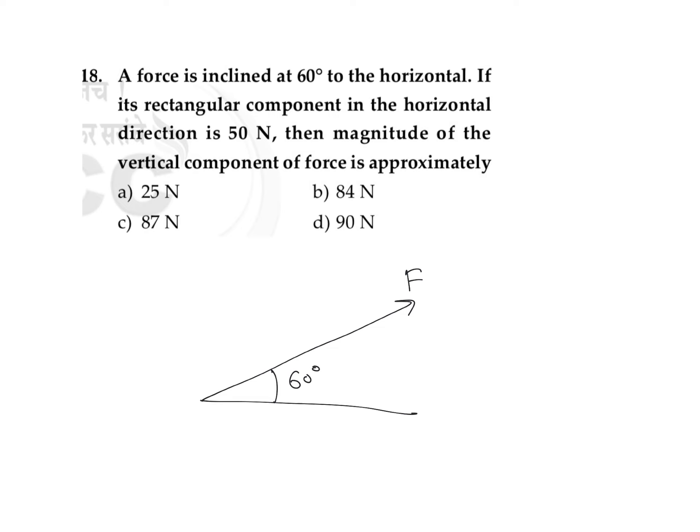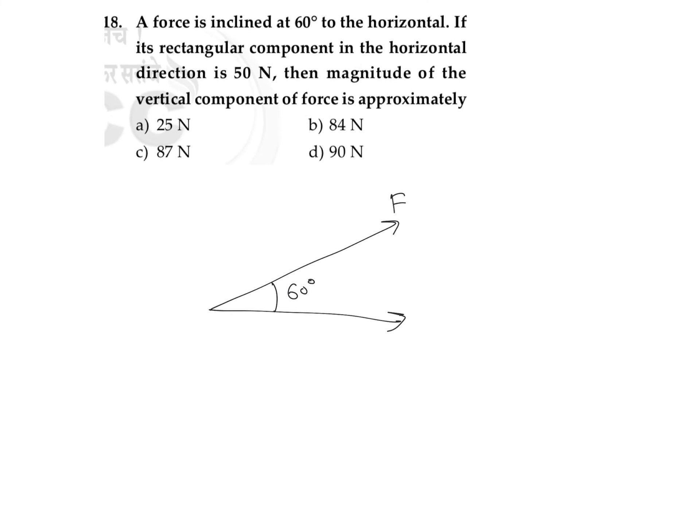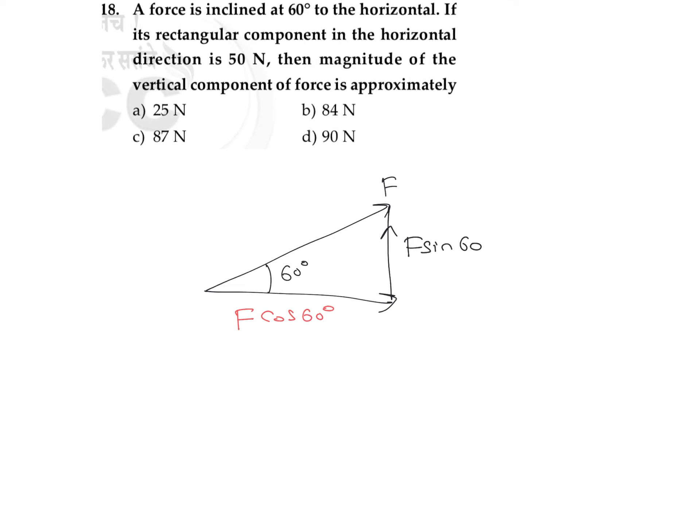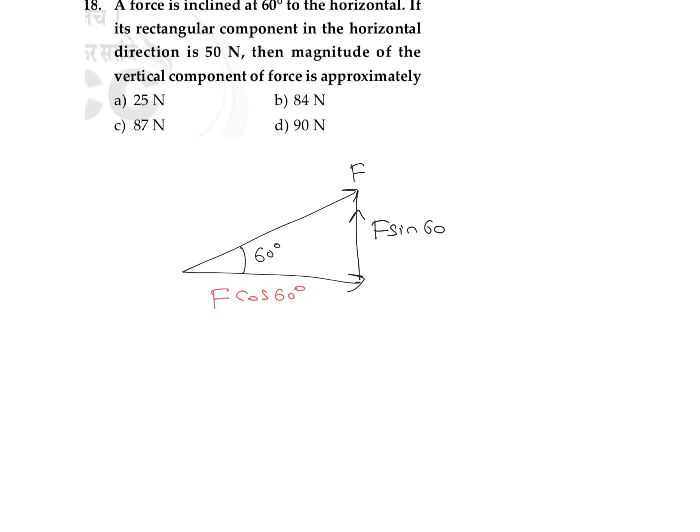If its rectangular component in the horizontal direction is 50, then we know the component along this direction is F cos theta, or F cos 60. The component which is perpendicular to that is F sine 60. So we need to find out the vertical component, or the value of F sine 60.